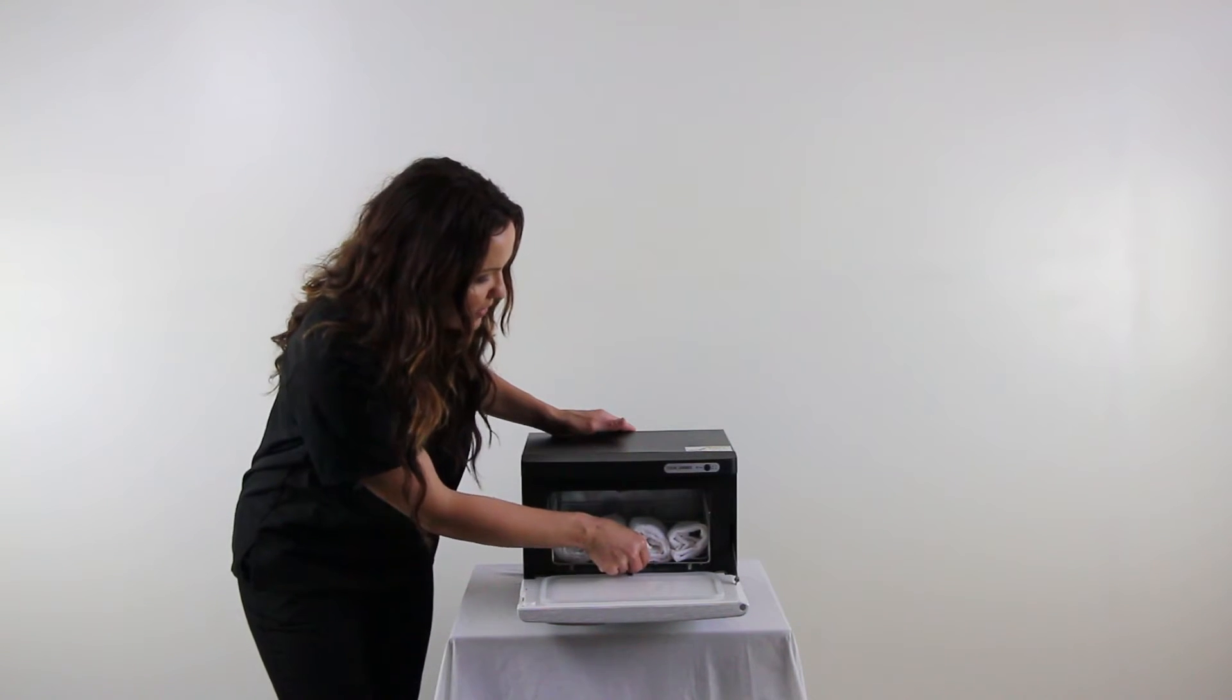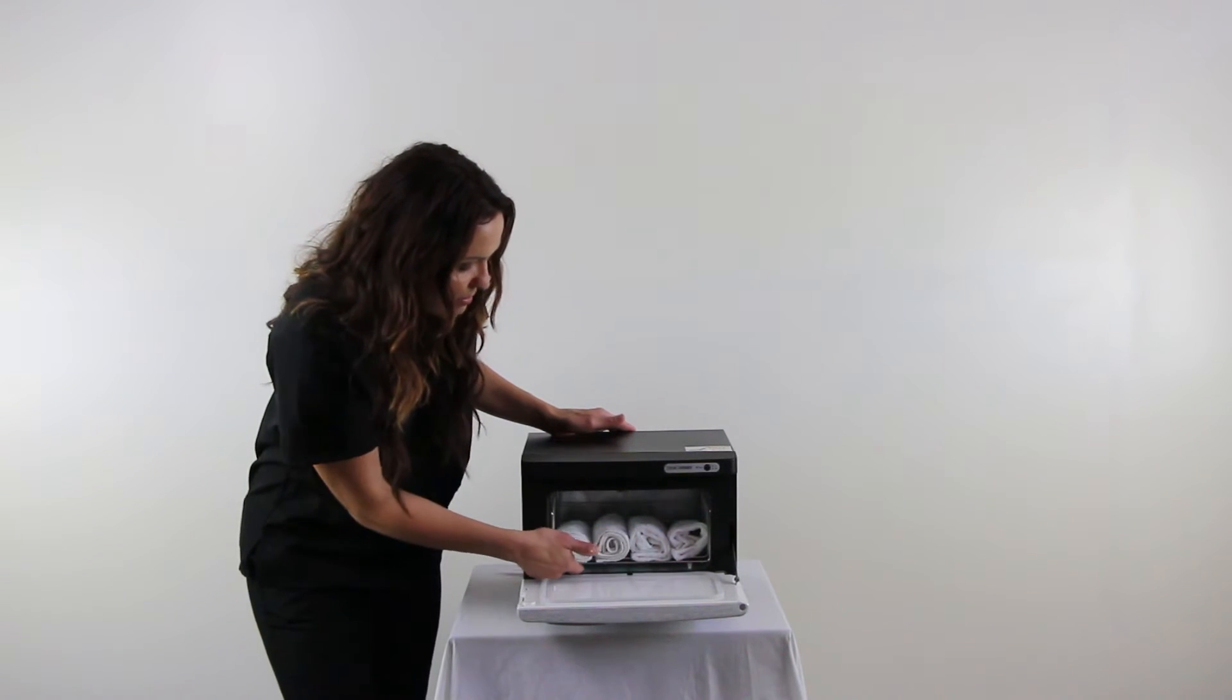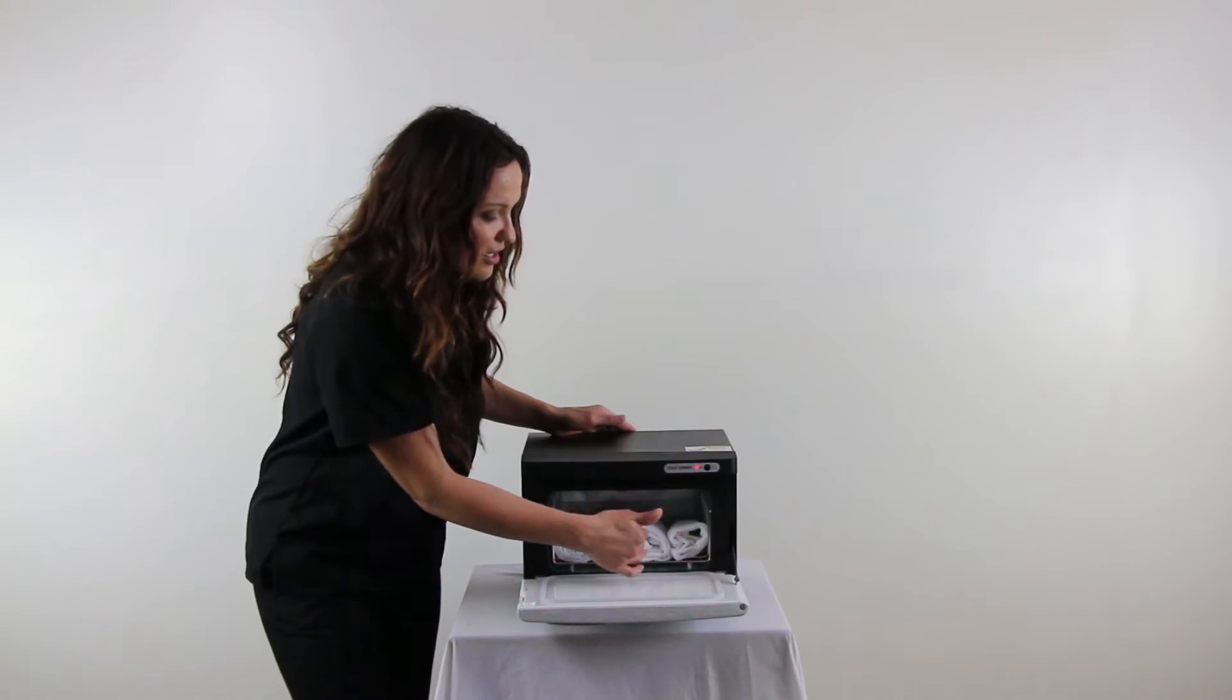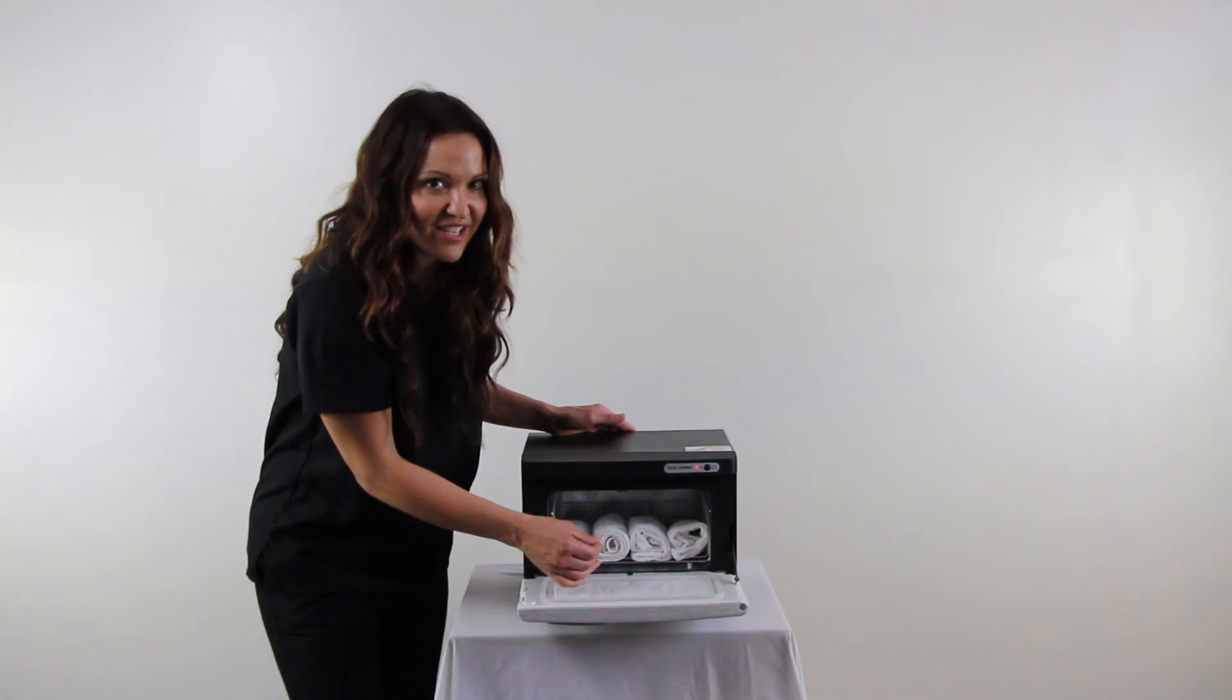Now this unit does have this one single rack and on the bottom of the rack are these nice little rubber glides. This is going to prevent any scratching of the inside of the unit. Love it.